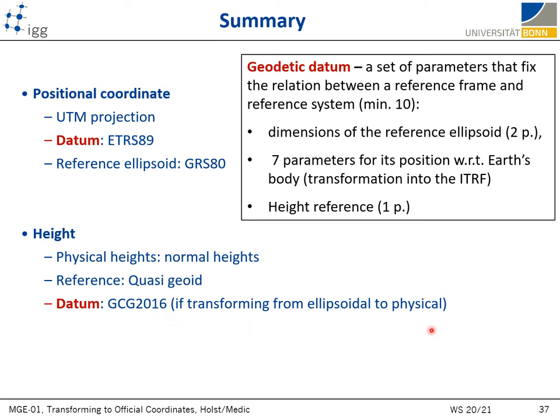What I haven't mentioned so far is the term geodetic datum. A geodetic datum can be explained as a set of parameters that fix the relation between a reference frame and the reference system. The reference system is a set of conventions and constants, the reference frame is the realization of the system by defining physical points on Earth and determining their coordinates. The geodetic datum is a set of parameters defining this relation, and typically we need 10 parameters: the dimensions of the reference ellipsoid, seven parameters of transformation, and a height reference. There is a lot of confusion about these terms in literature, and people often use them interchangeably.